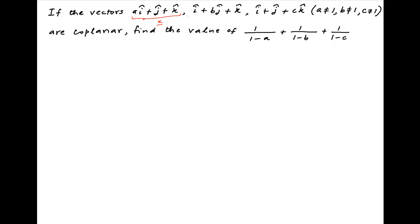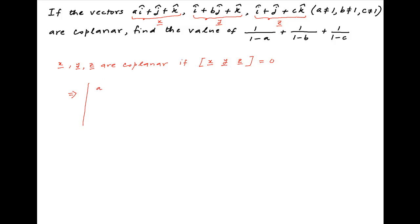Let's denote the three given vectors by X, Y, and Z respectively. These three vectors are coplanar if their scalar triple product XYZ is equal to zero. The scalar triple product of XYZ can be expressed in determinant form. The first row is made up of the components of vector X, the second row is made up of the components of vector Y, and the third row is made up of the components of vector Z, and the value of this determinant is equal to zero.